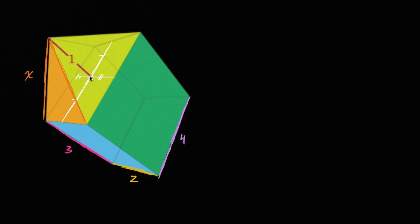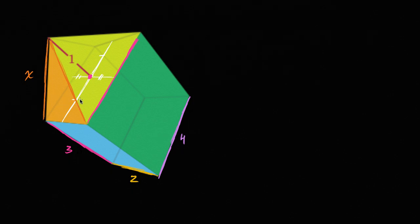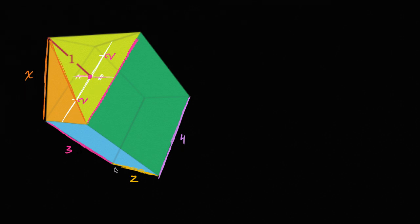The key here is to realize that this base point right over here is halfway in this direction and halfway in this direction. This entire length right over here is four, so halfway — this is going to be two and two. And then the other thing we can figure out is what this length is going to be, because it's halfway in that direction. If this whole thing is two, and since this is a rectangular prism, this length is going to be the same. So each of these is going to be one and one right over there.